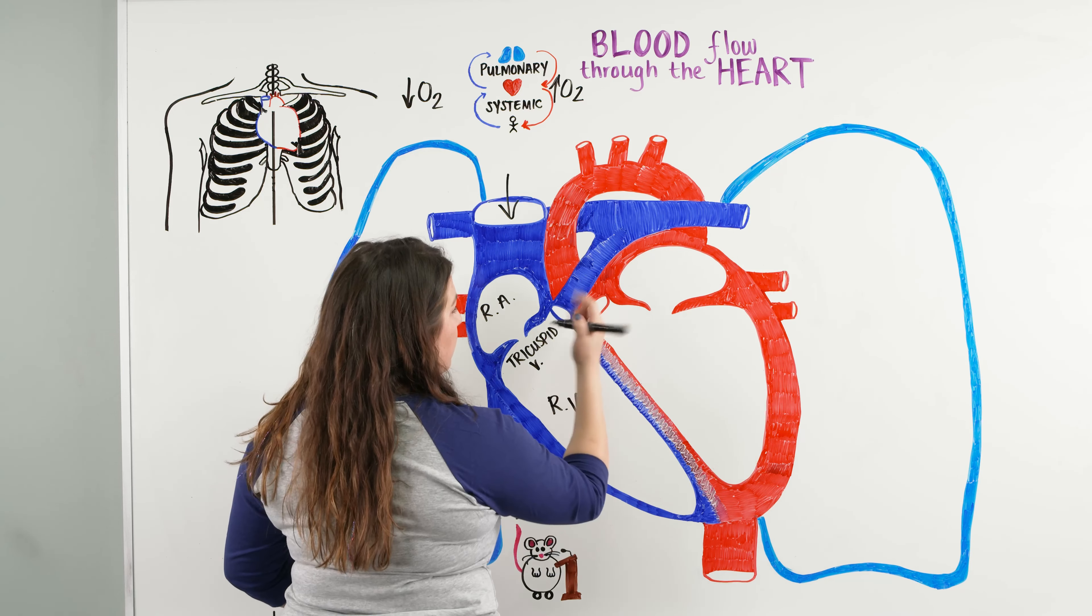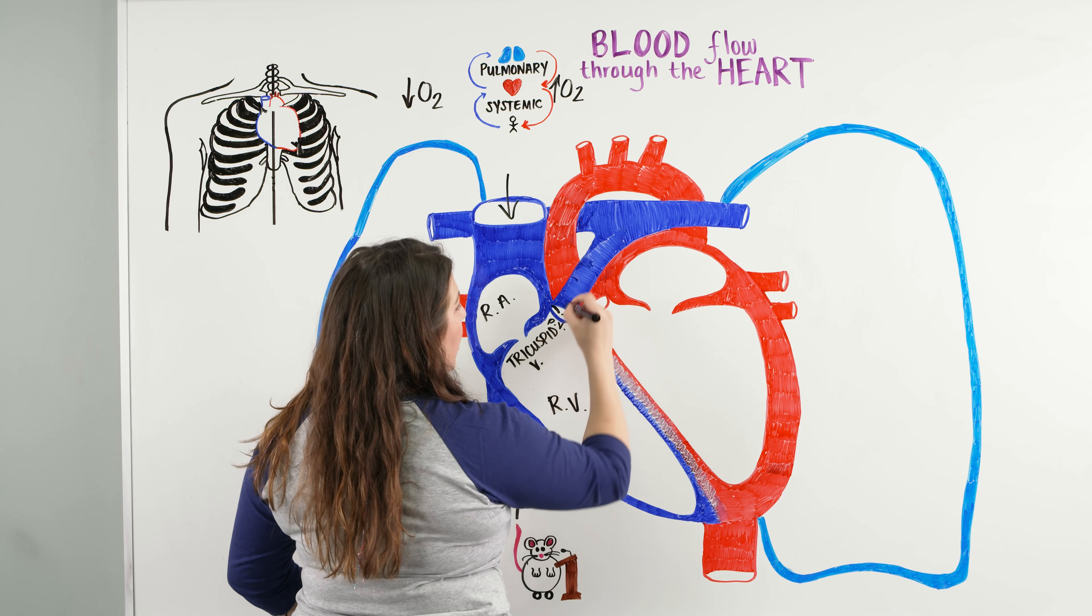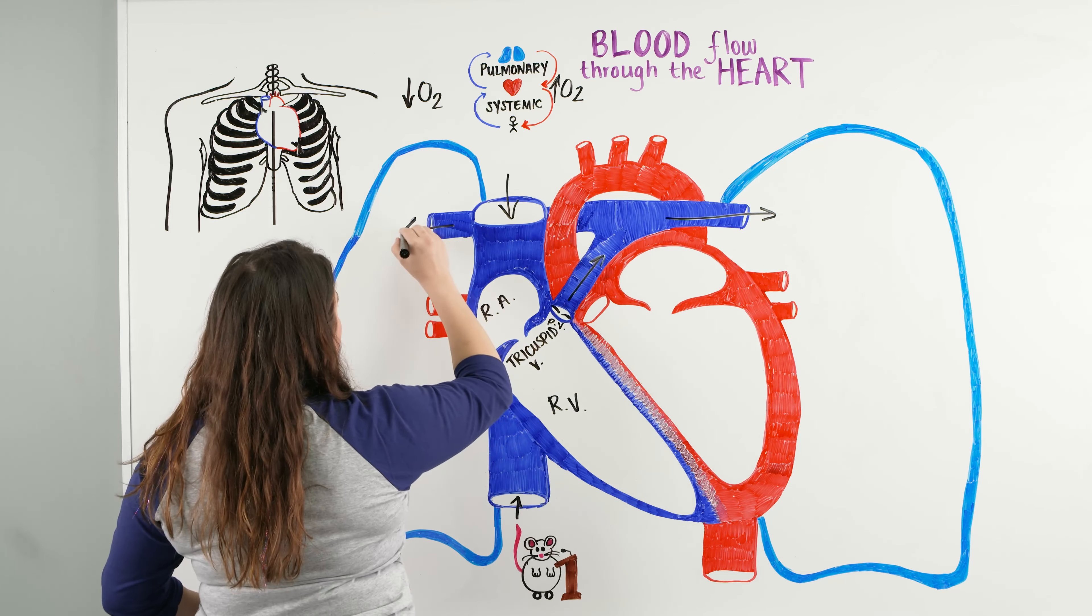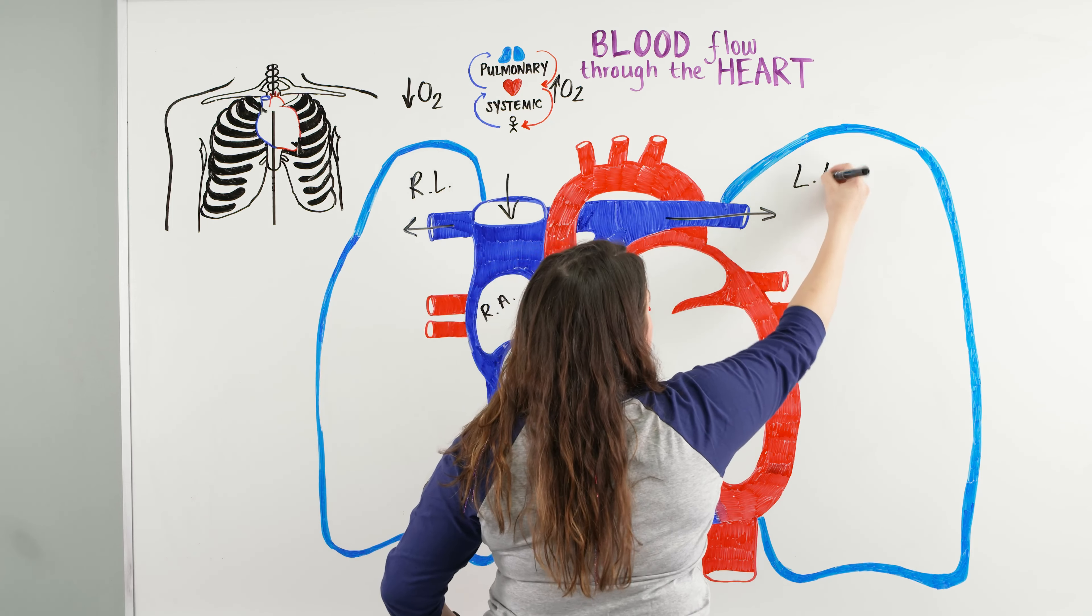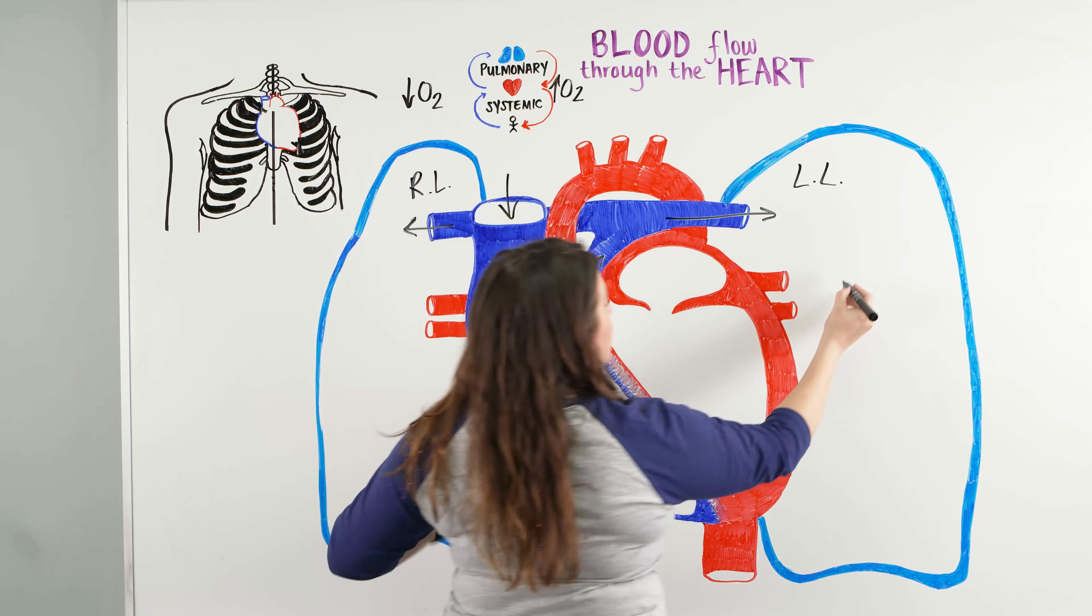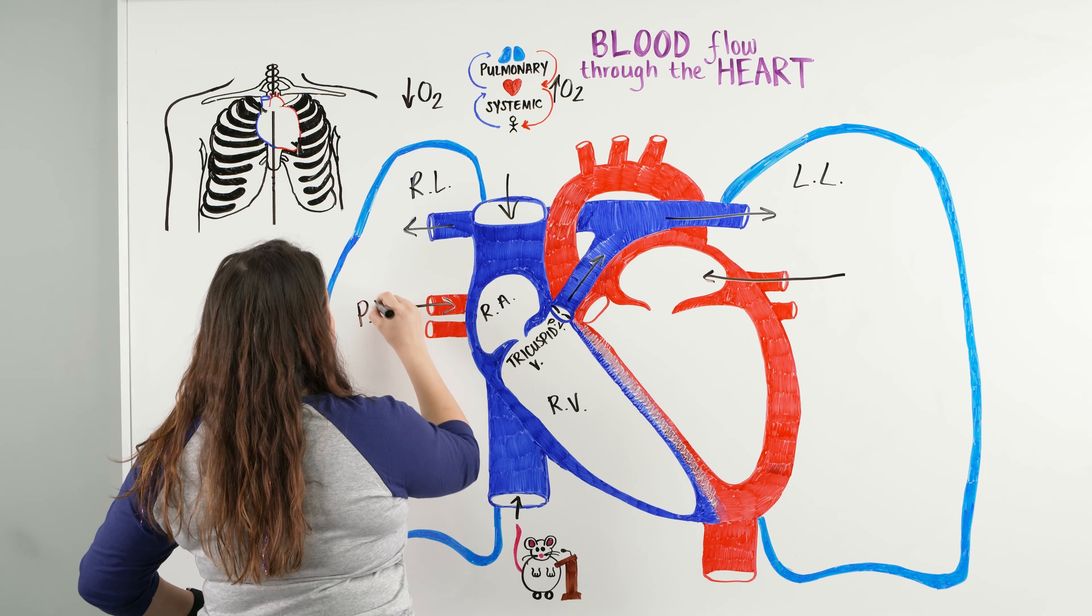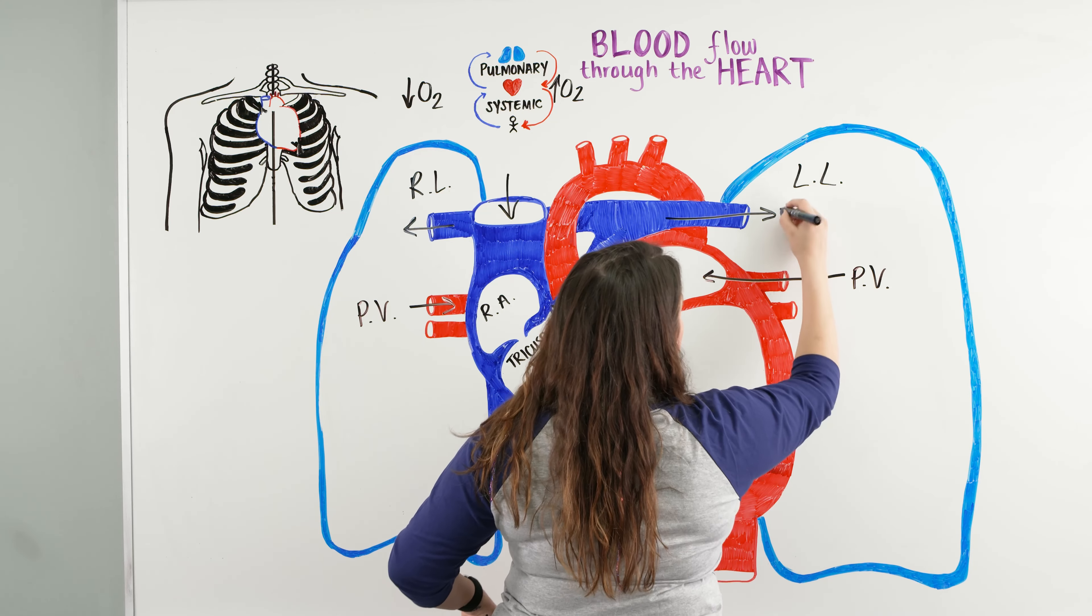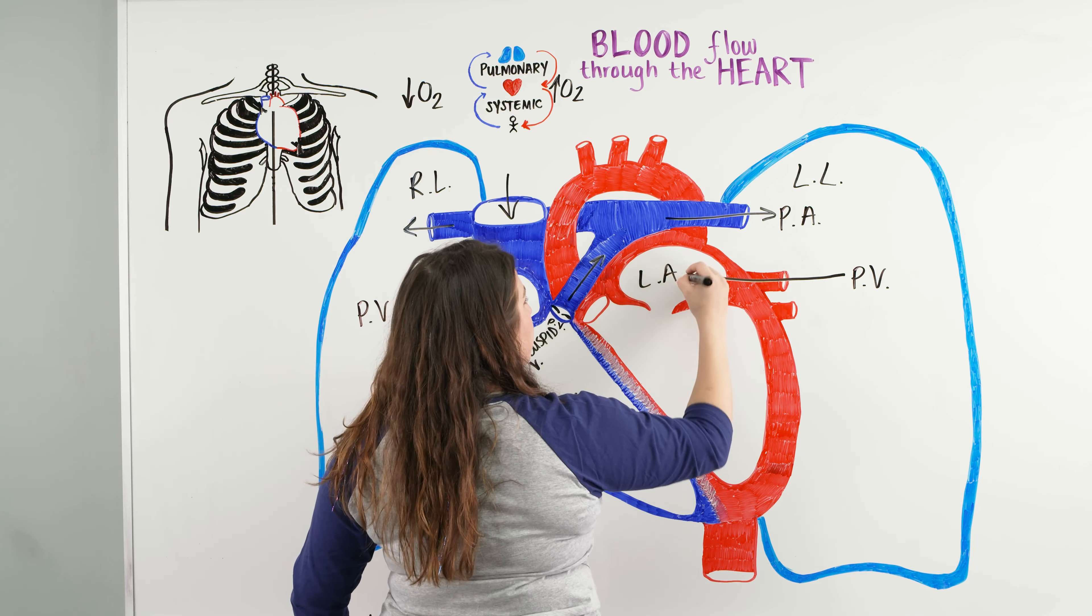From there, we're going to push up through, right here, which is our pulmonary valve, up the pulmonary trunk, and out the pulmonary arteries. So now we're in the right lung and the left lung. From there, this oxygenated blood now needs to return to the heart. So when it returns to the heart, what does it go through? It goes through pulmonary veins, pulmonary veins, into the left atrium.